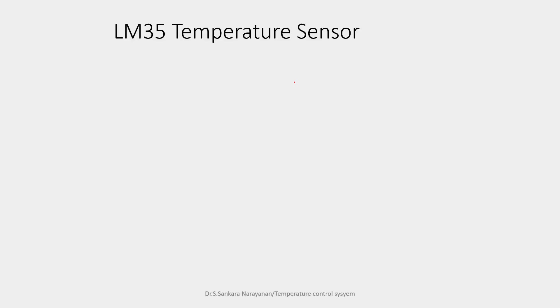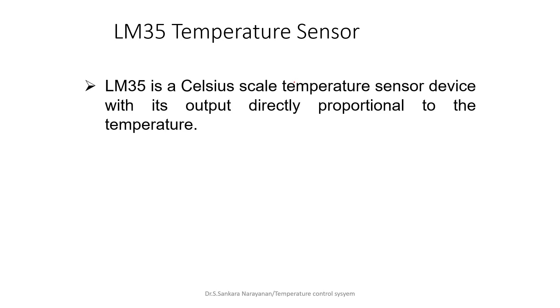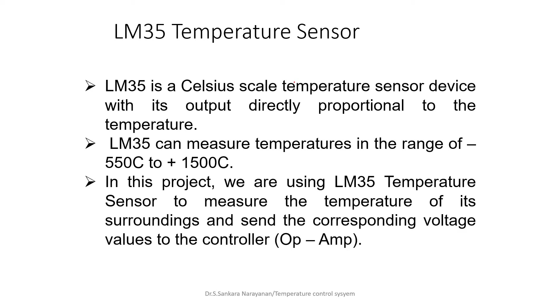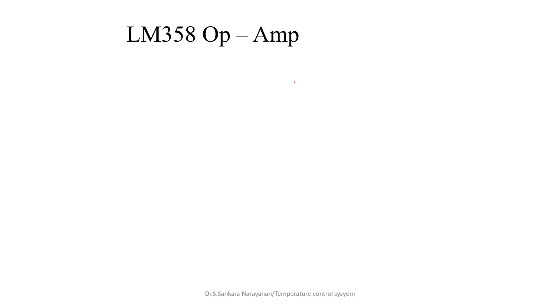The first component is the LM35 temperature sensor. It is a Celsius-scale temperature sensor device whose output is directly proportional to the temperature. It measures temperature ranging from -55°C to 150°C. In this project, it is used to measure the temperature of its surroundings and send the corresponding voltage values to the controller, which is the operational amplifier.